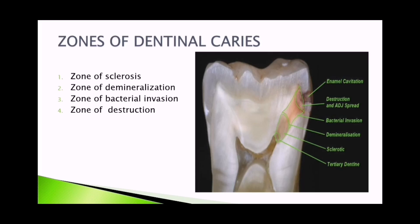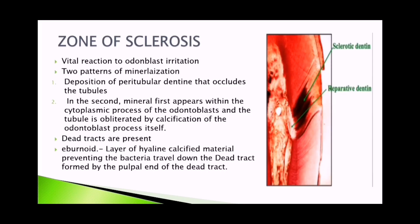We have four zones of dentinal caries: zone of sclerosis, zone of demineralization, zone of bacterial invasion, and zone of destruction. In the zone of sclerosis, the sclerotic zone is located beneath and at the side of the carious lesion.